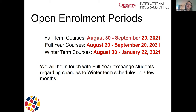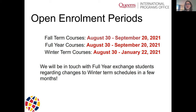Let me refresh you on the open enrollment periods. For fall term courses, they run from August 30 to September 20. For full-year courses, also August 30 to September 20. If you are a full-year student looking at a winter term course, open enrollment technically runs from August 30 all the way until January 22, which is the last day to add or drop a winter term course. We'll be in touch with full-year exchange students regarding changes to your winter term schedule likely in October or November.